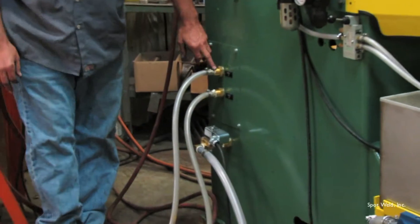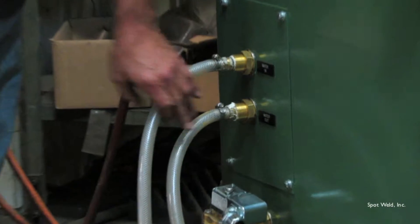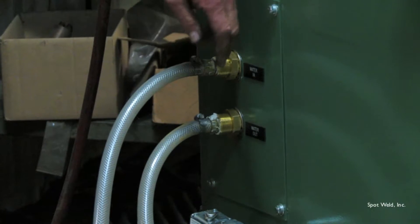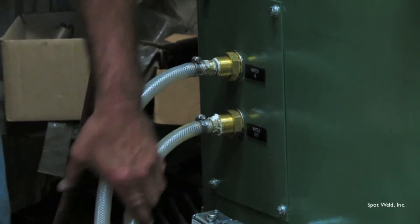Also on this side, we have a water in, water out. This is where you're going to hook your chiller. Your chiller feed water will go in the water in, return water will be the water out. That's the internal cooling.